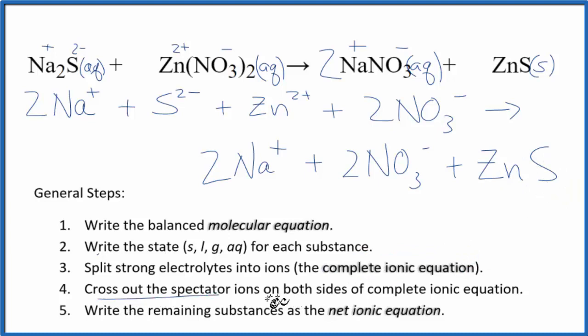Now we can cross out these spectator ions. They're on both sides of the complete ionic equation. So in the reactants, I see I have 2 sodium ions. In the products, I have 2 sodium ions. They haven't changed, so we're just going to cross that out.